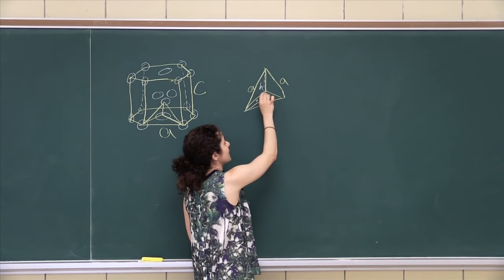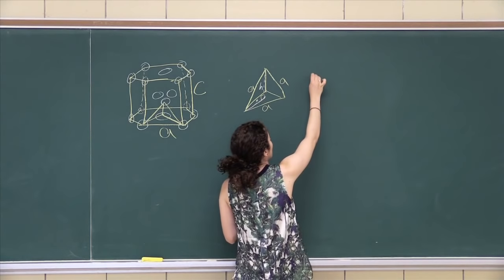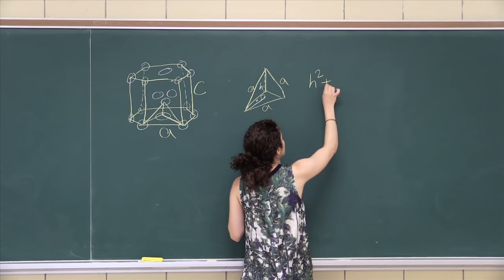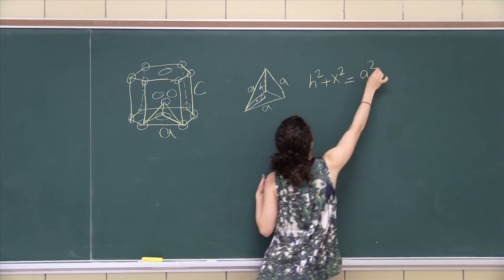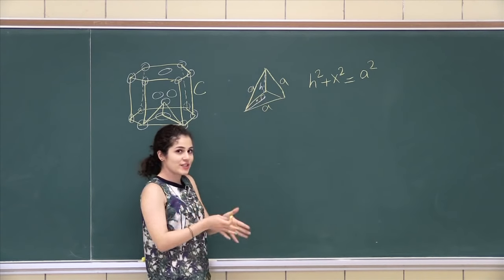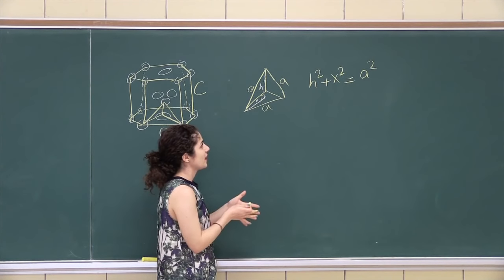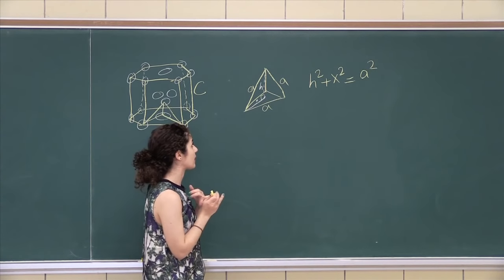So how I would relate this, because this is a right angle triangle, I would say that H² + X² = A². And that would just be the interior triangle of this tetrahedral site. Now what we don't have is H and we don't have X. And I'm gonna show you how you find that.